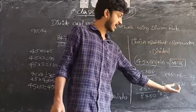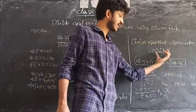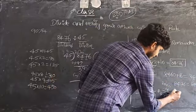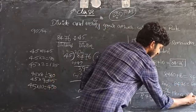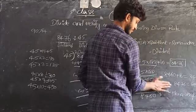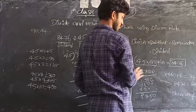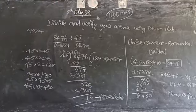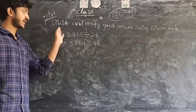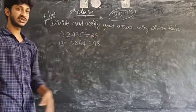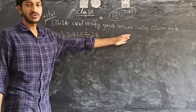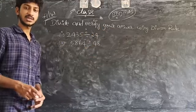So divisor into quotient plus remainder gives 8476, and the dividend is 8476. Both are equal, hence verified. Now do these two practice problems: divide and verify your answer using the division rule — first divide the numbers to get the remainder and quotient, then use the division rule to verify. Thank you, bye.